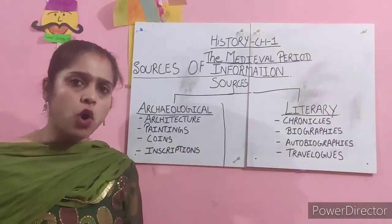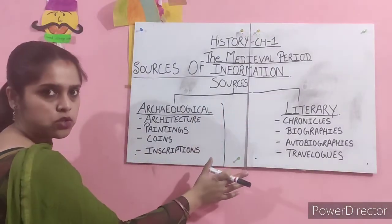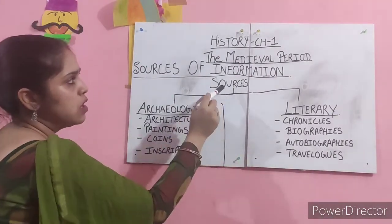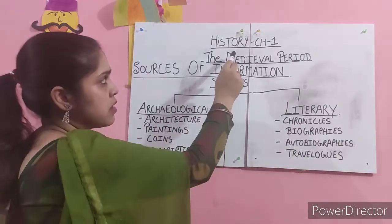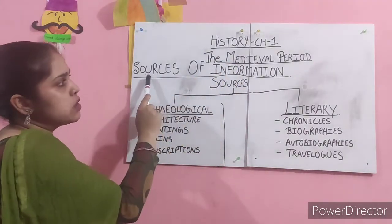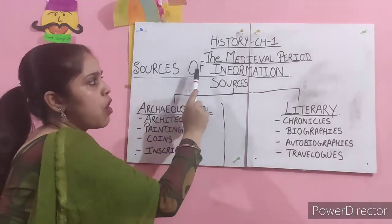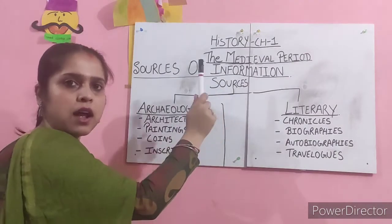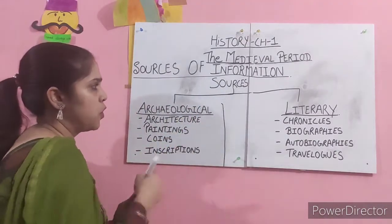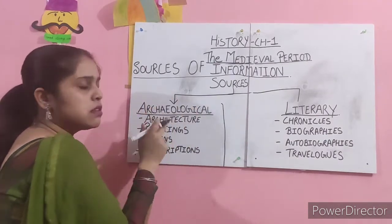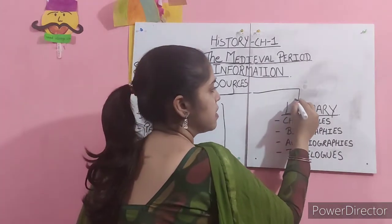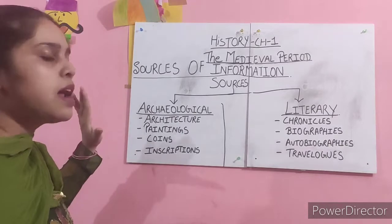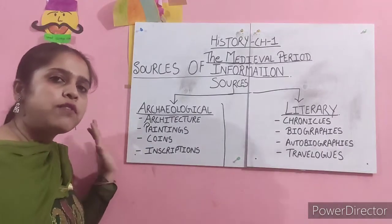I hope you all have a copy with you. Please make the flowchart the way I have made it here — in your notebook. Write down the subheading: sources of information. Then write 'sources' and make the flowchart: first is archaeological, second is literary.